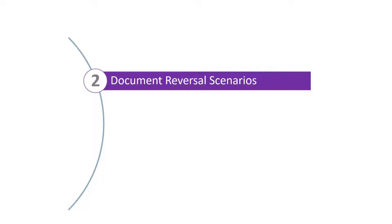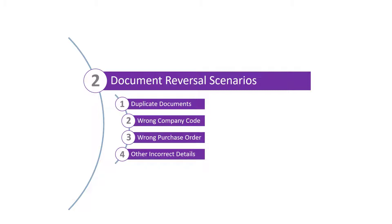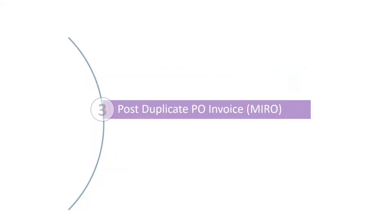So we've established where transaction MR8M fits in the Procure2Pay process. Now let's discuss the scenarios where a document requires reversal. The most common usage of transaction MR8M is reversing invoices and credit memos posted against a purchase order that are duplicate documents — that is, the same document has been posted more than once — are documents posted against the wrong company code, are documents posted against the wrong purchase order, or are documents posted with any other incorrect details that cannot be changed on a posted document. In this video we'll post a duplicate invoice against a purchase order, and then use transaction MR8M to cancel the invoice document.